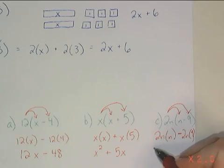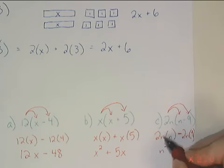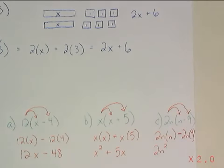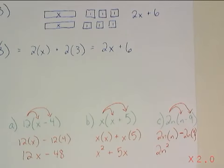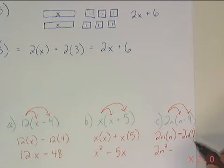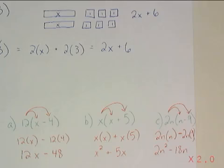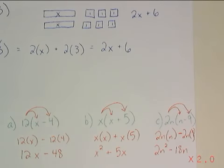2n times n — n times n is n squared. Since it's also multiplied by a 2, I get 2n squared. 2n times 9 — 2 times 9 is 18, times n. So 2n squared minus 18n. How'd you do?